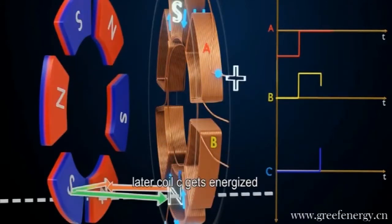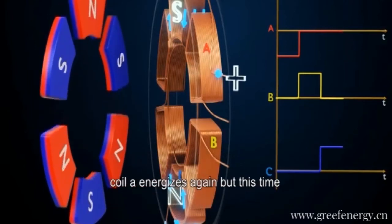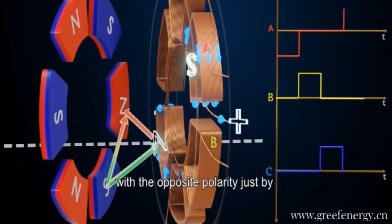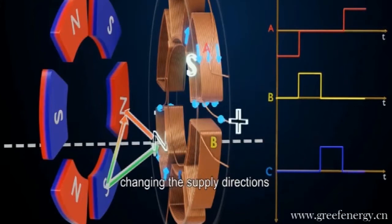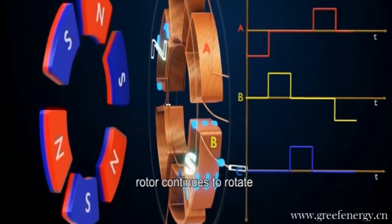Later, coil C gets energized. After that, in the next half rotation, coil A energizes again, but this time with the opposite polarity, just by changing the supply directions. The process constantly repeats, and the rotor continues to rotate.